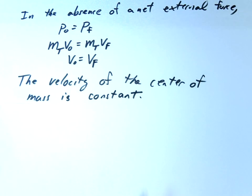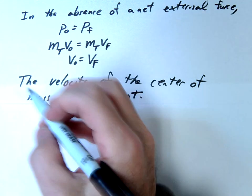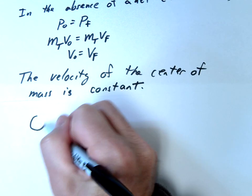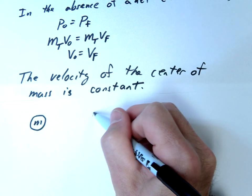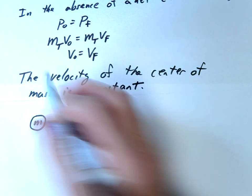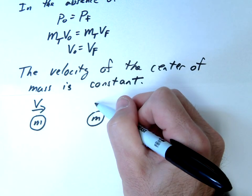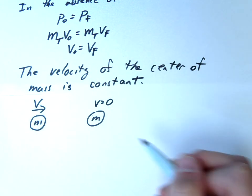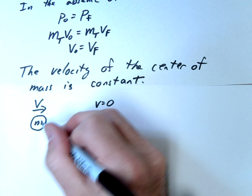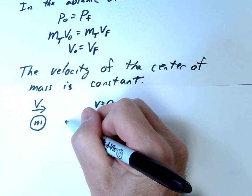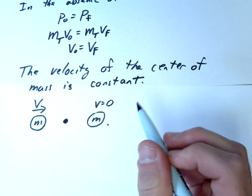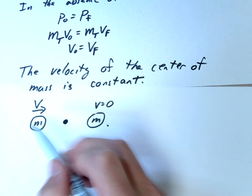So let me give you a couple examples of this. Let's say, for example, we have one ball M, one ball M. Let's say this ball is moving with velocity V and this one is V equal to zero. So the center of mass, since the masses are the same, is going to be the exact center of this system.